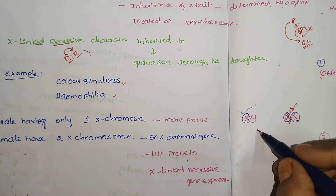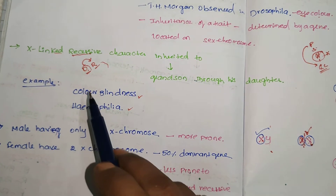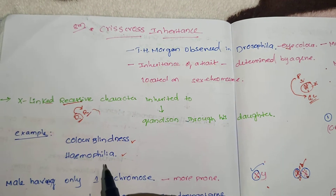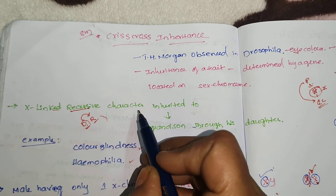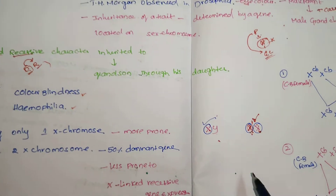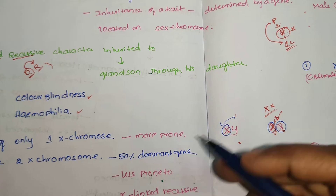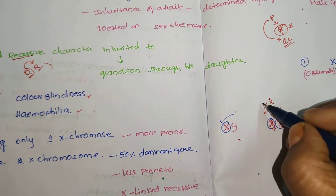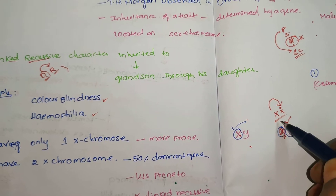We need to understand dominant and recessive characters. Some characters are dominant and some are recessive. Dominant characters are expressed over recessive ones. The best examples of crisscross inheritance are color blindness and hemophilia — both are X-linked recessive characters. These X-linked recessive characters are inherited to the grandson through the daughter. In females, who have two X chromosomes (X-X), if one chromosome carries the disorder, the other X chromosome is dominant and protects against expression.